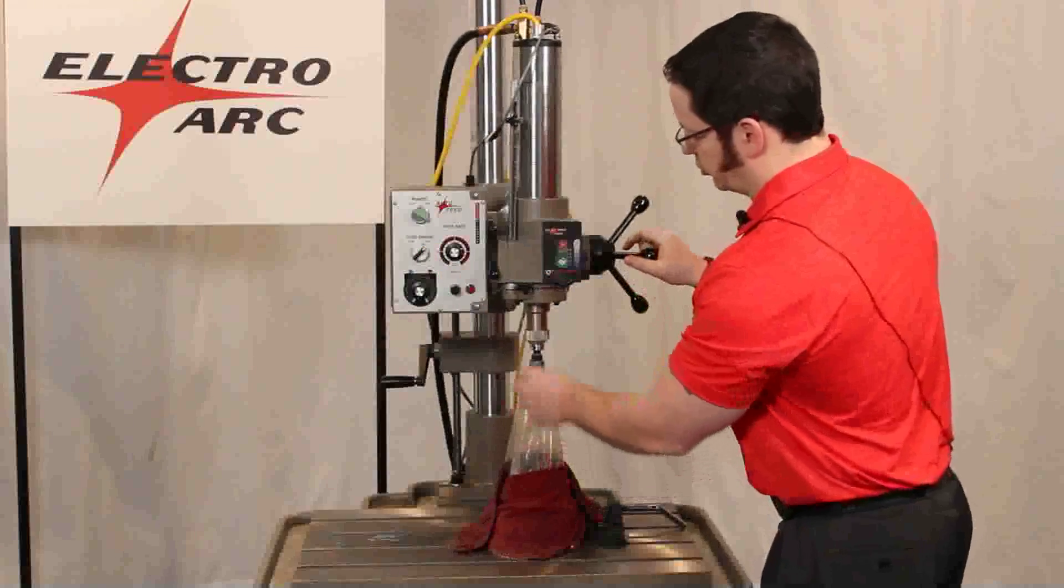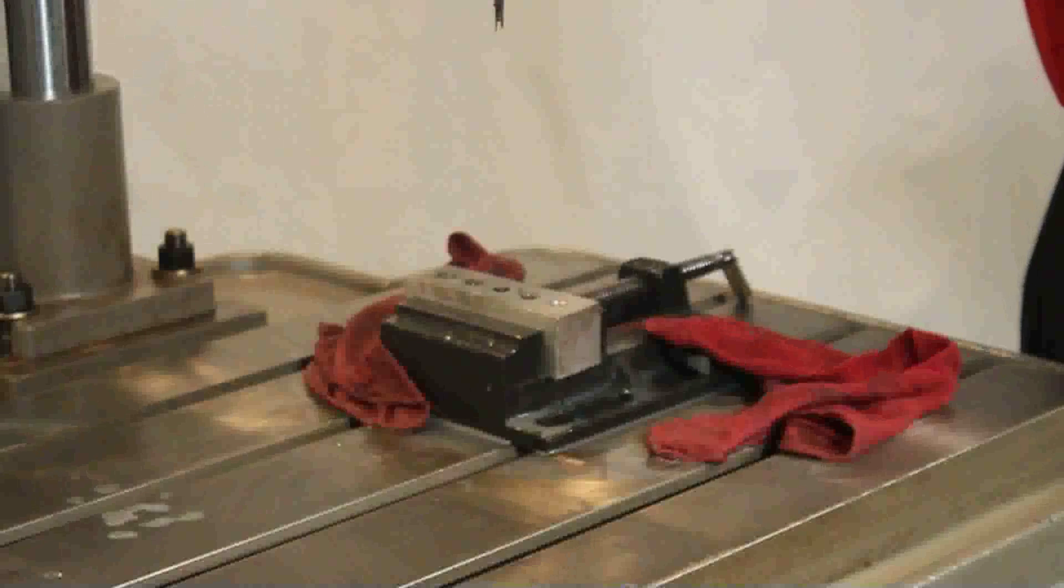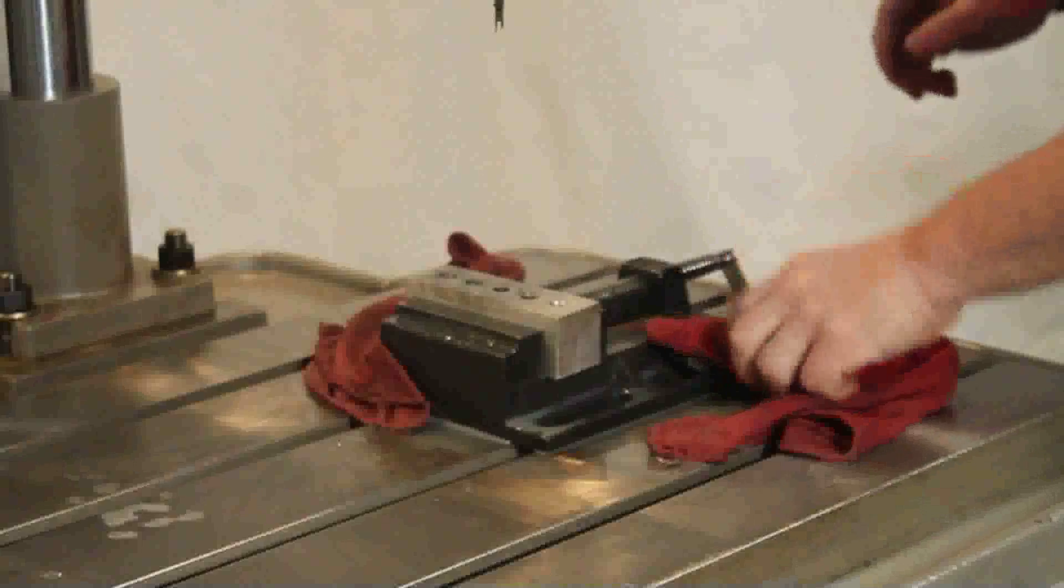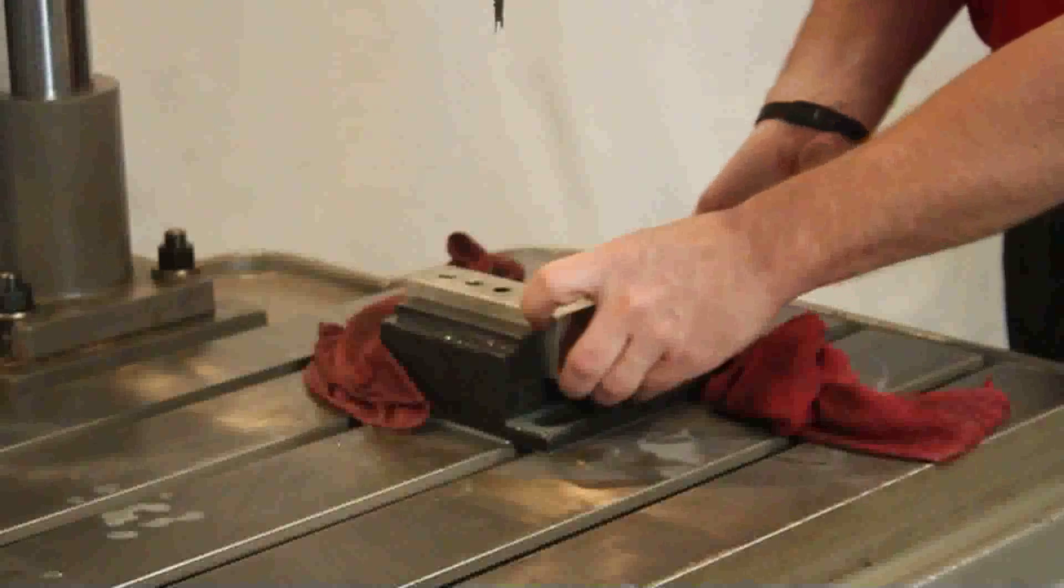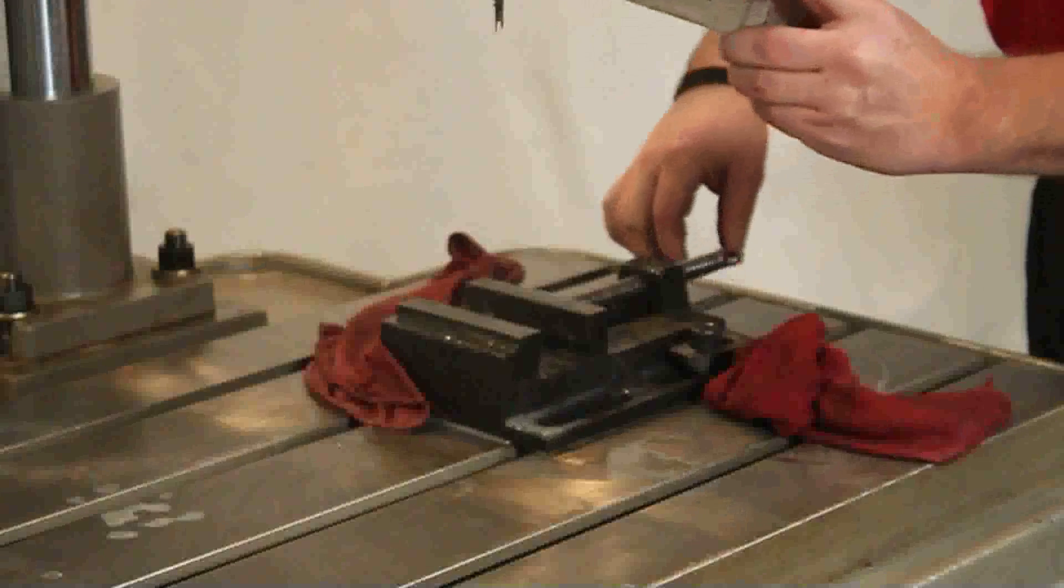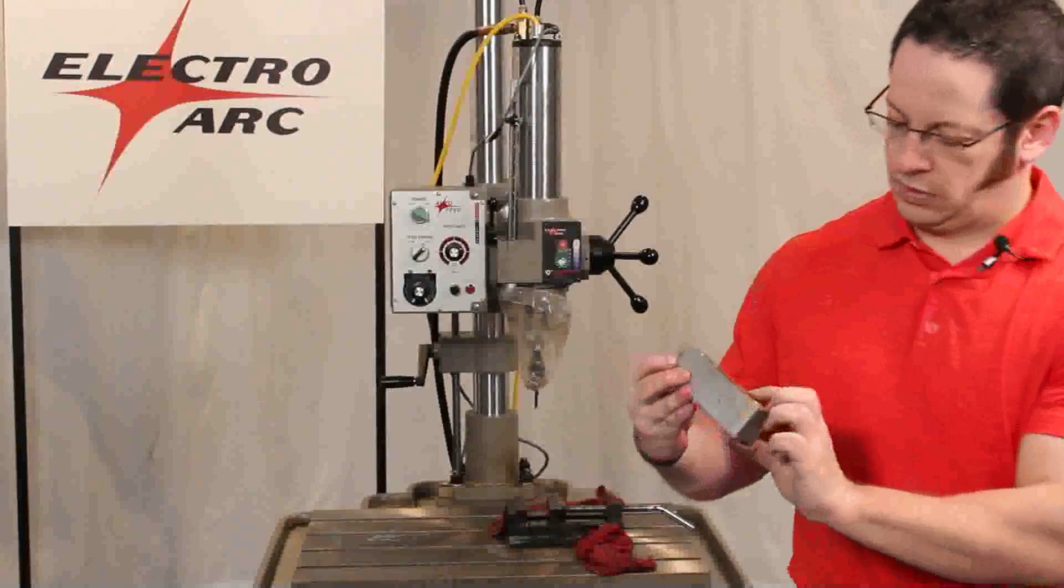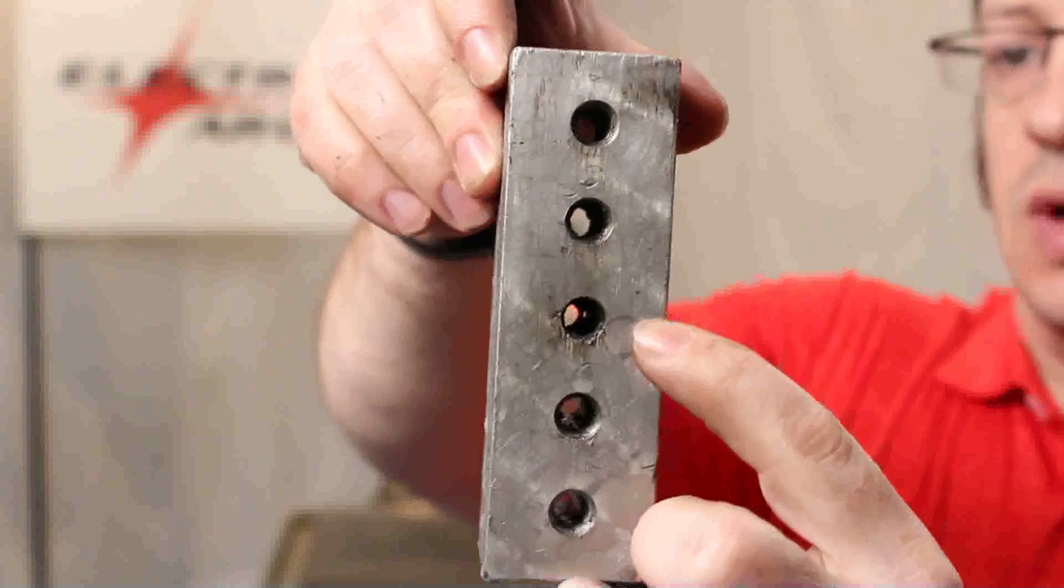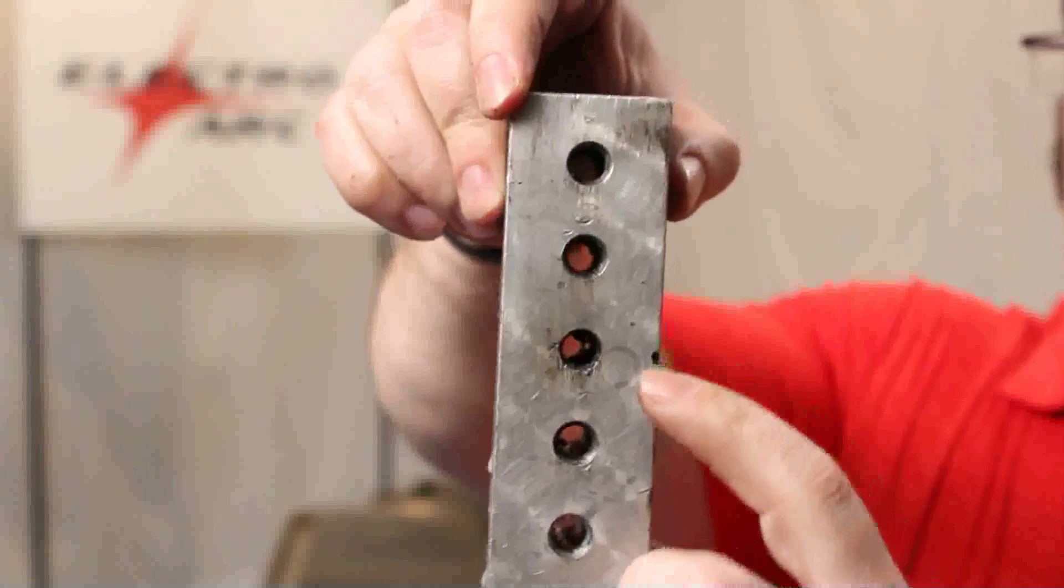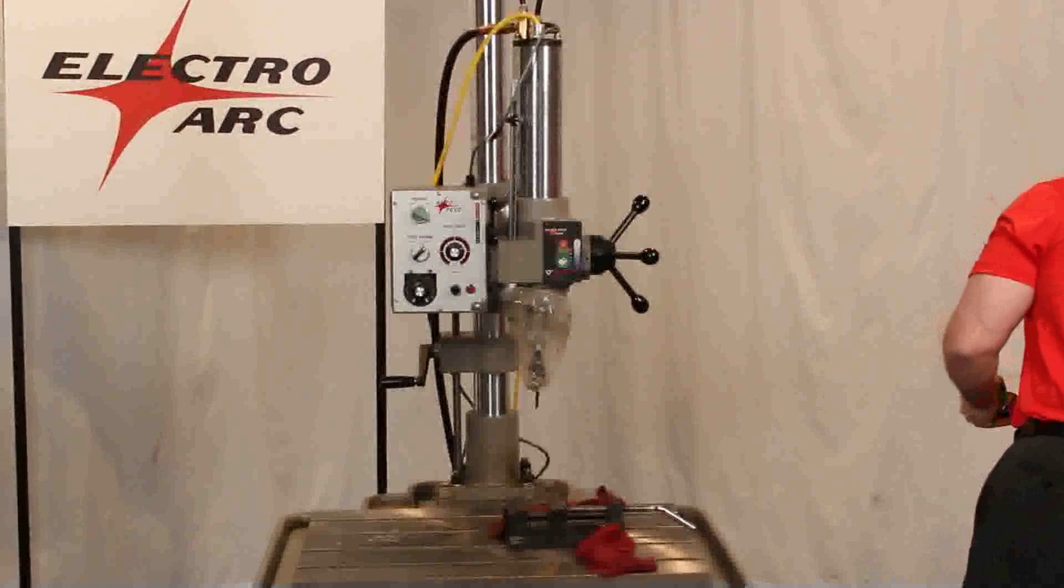All right, so we triggered our depth stop, so we should be all the way through there. As you can see, the tap has been completely removed. Now all we would need to do, it does look like there's a flute stuck on the side there, so we would just use a magnetic pick to pull that out of there, and then we can run a new tap through just to get rid of any other debris that might be in there.